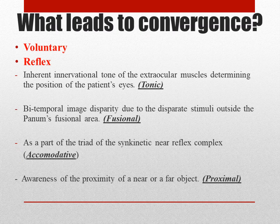Now apart from the voluntary factors, there are many involuntary factors also leading to convergence. The first is tonic convergence. Tonic convergence actually helps us to keep our eyes parallel when we are looking at a distant object — that is called the physiological position of rest. This happens because of the inherent innervational tone of the horizontal recti muscles. Had this tonic vergence not been there, our eyes would have been totally diverged when looking at distance.